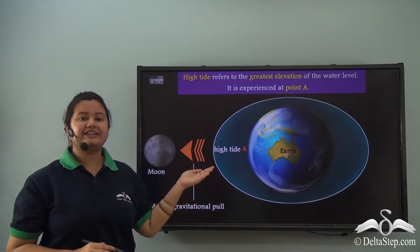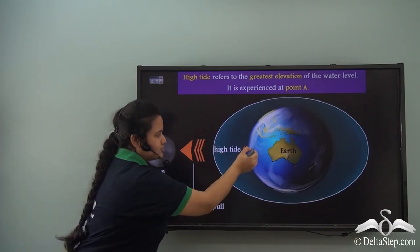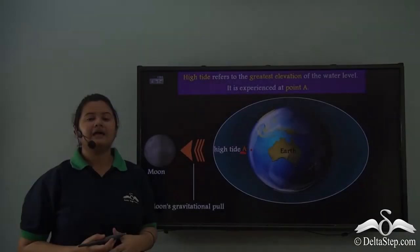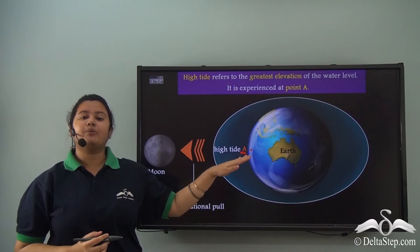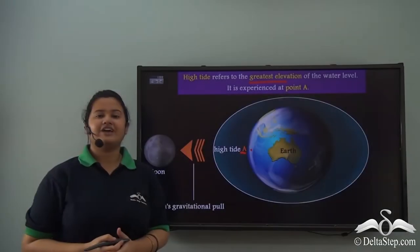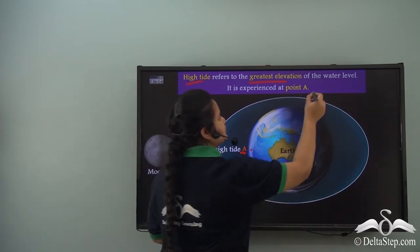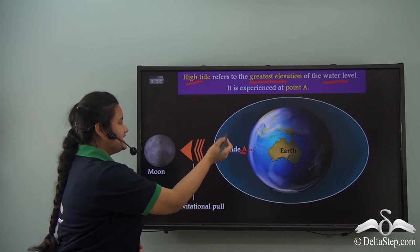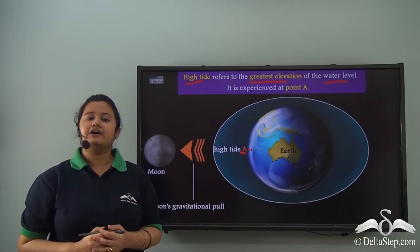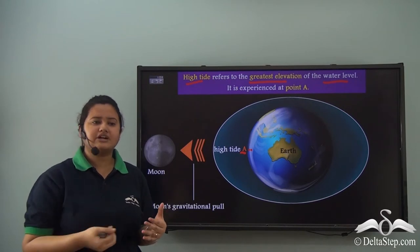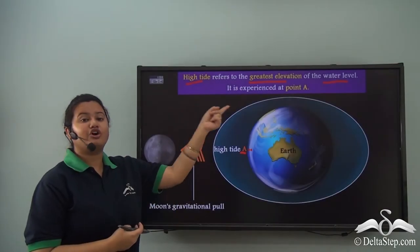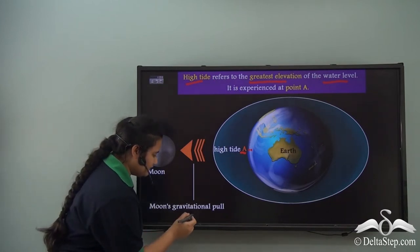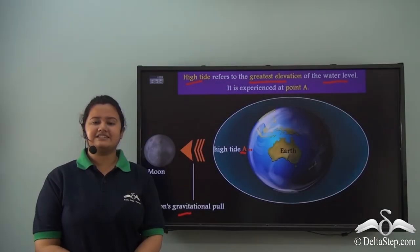The portion of the earth that faces the moon — point A — experiences a massive rise in the water level. This is known as high tide. High tide refers to the greatest elevation of the water level, and here it takes place at point A, the portion that directly faces the moon. The moon is not pulling the water with a rope, so there must be another force causing this portion of the earth's surface to bulge out.